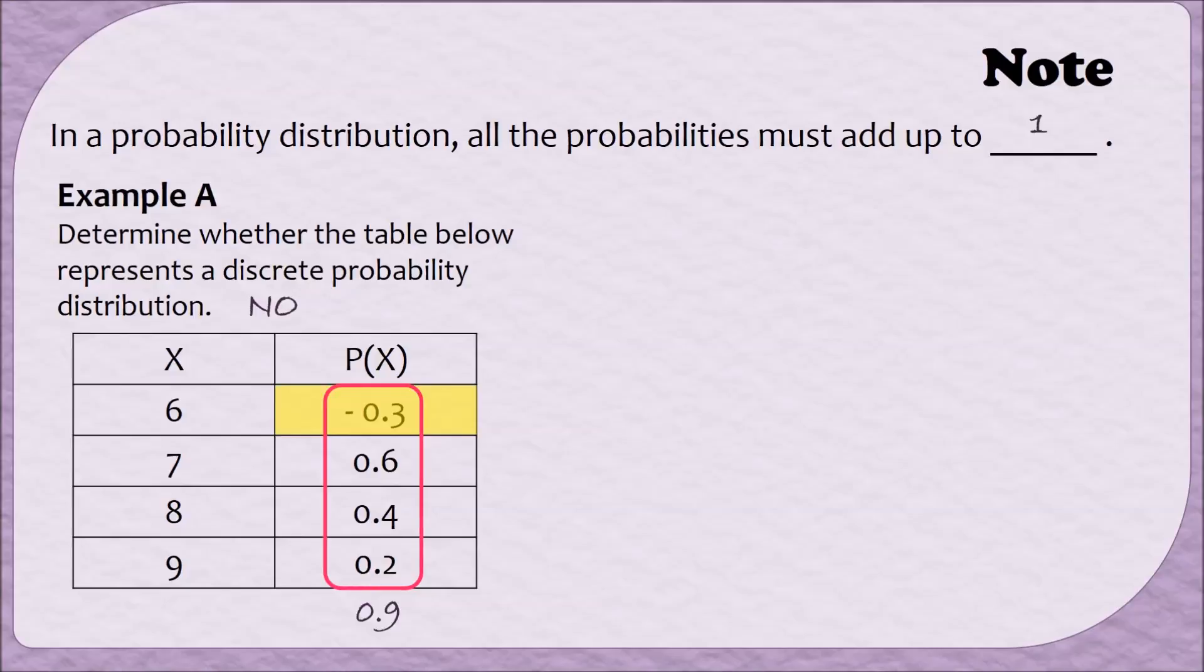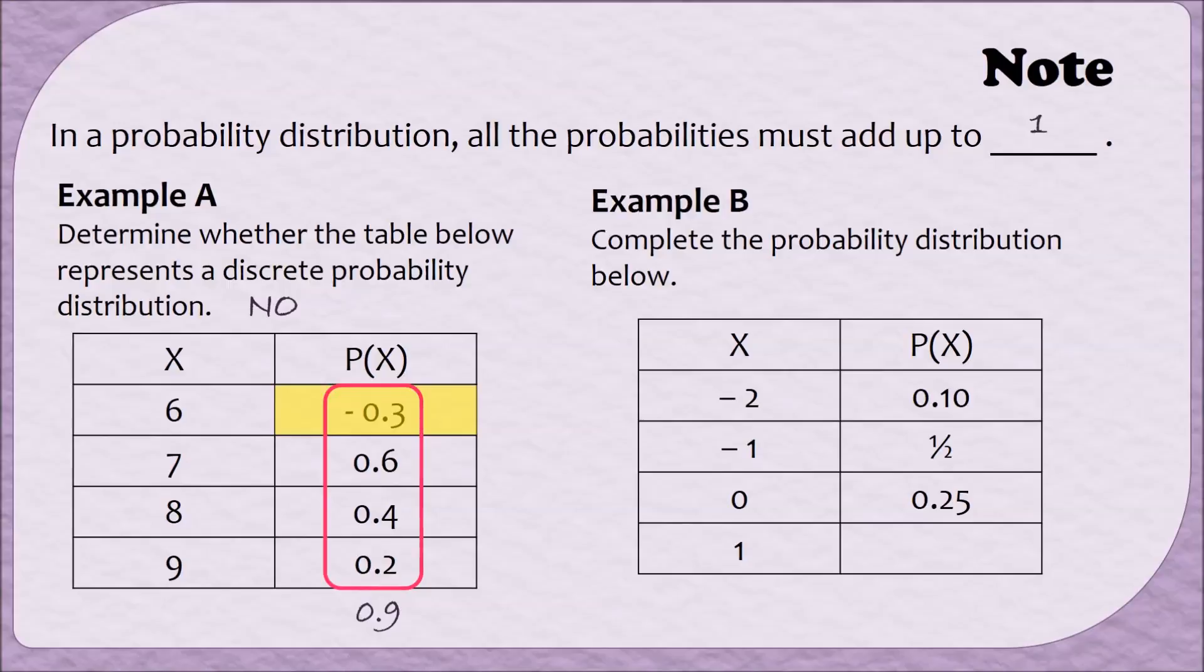Let's do another example similar to the M&M example. In example B, we've been asked to complete the probability distribution below. Notice that this table does include some negative numbers, but that's okay. An event could be negative, but a probability cannot. So for example, maybe the event here means the amount of money that you win. So if your event was negative 2, that would mean you would lose $2. If the event was a 1, that might mean you win $1. And if the event is a 0, that would mean you neither win nor lose anything. Also notice that our probabilities can take on multiple forms. We have two decimal values and we have a fraction. And any format is okay whether it's fraction or decimal.